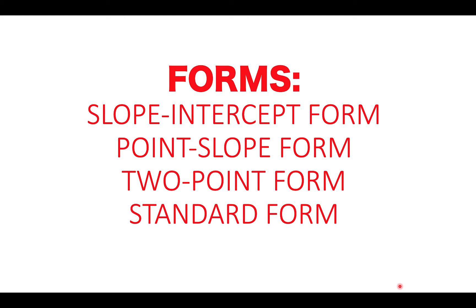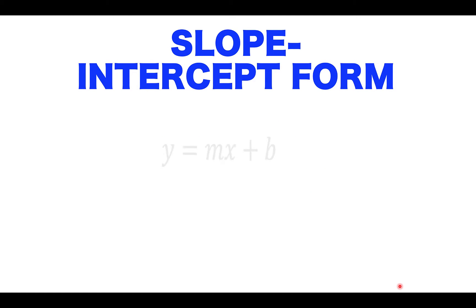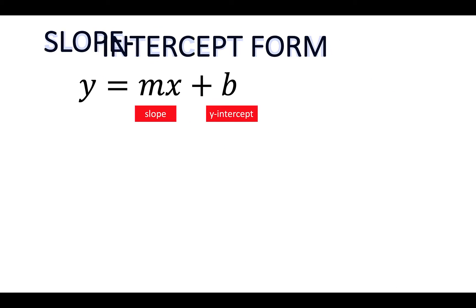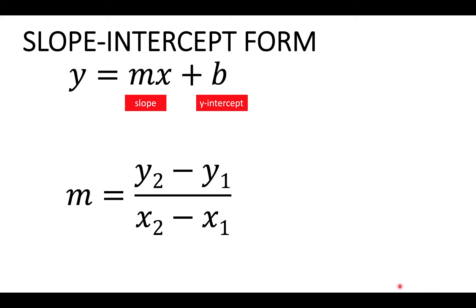Among these forms, we are more interested in the first three forms. Let's begin with the first form, the slope-intercept form. y equals mx plus b is the slope-intercept form of a linear equation. Here, m is the slope and b is the y-intercept. The slope m is defined as y₂ minus y₁ over x₂ minus x₁ when given two points with coordinates (x₁, y₁) and (x₂, y₂).